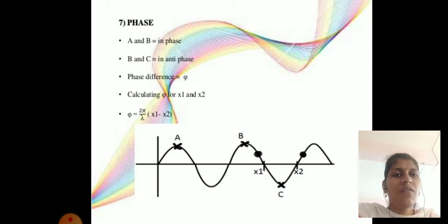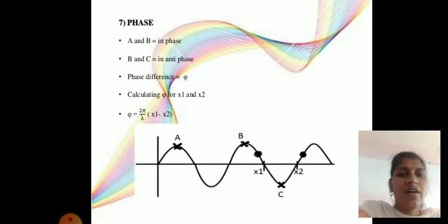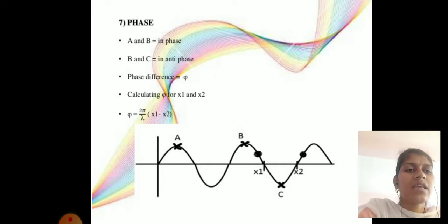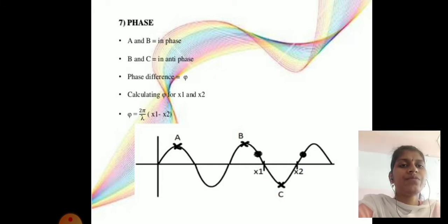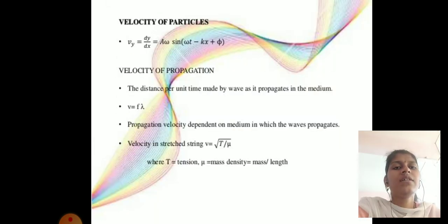The phase difference φ between two particles at positions x₁ and x₂ is: φ = (2π/λ)(x₁ − x₂).